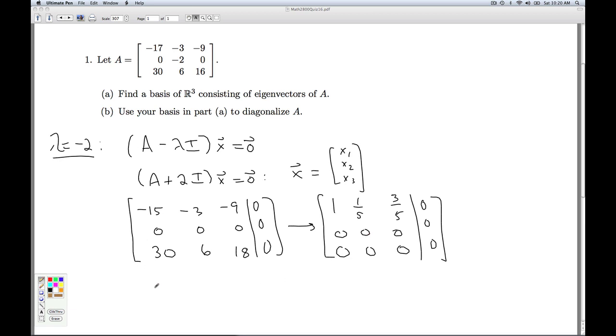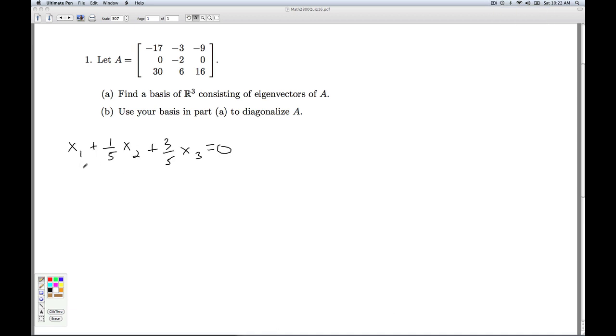So what's my solution? I get, when I take these out, I get x₁ plus a fifth x₂ plus three fifths x₃ is zero. Zero equals zero, zero equals zero, zero equals zero. This tells me that x₂ and x₃ are free. Okay, so from this equation then, I get x₁ is minus one fifth x₂ minus three fifths x₃.